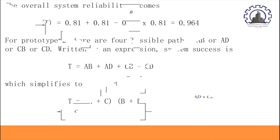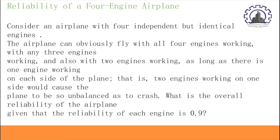As an example: consider an airplane with four independent but identical engines. The airplane can fly with all four engines working, with any three engines working, and also with two engines working — as long as there is one engine working on each side of the plane. Two engines working on one side would cause the plane to be unbalanced and crash. What is the overall reliability of the airplane, given that the reliability of each engine is 0.9?